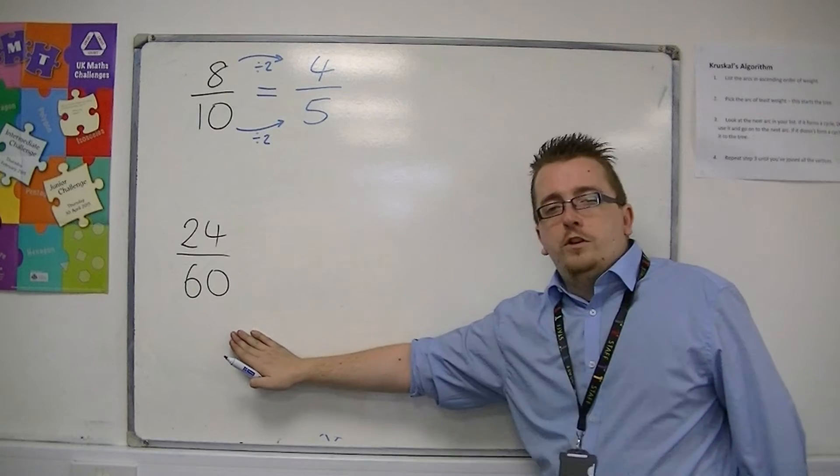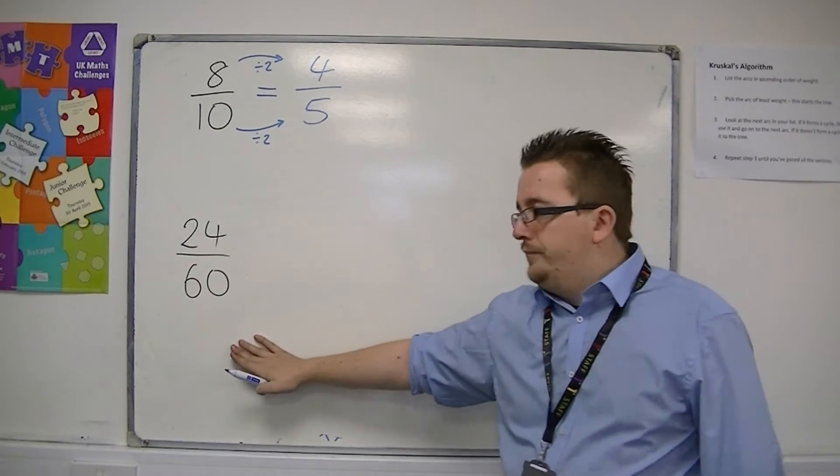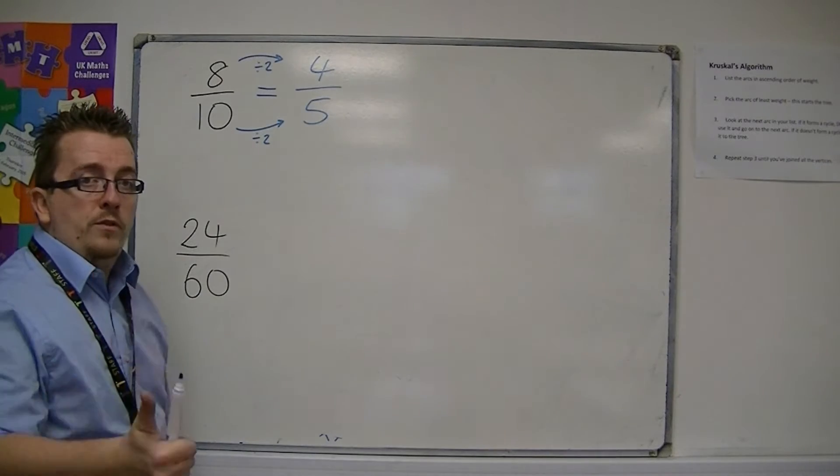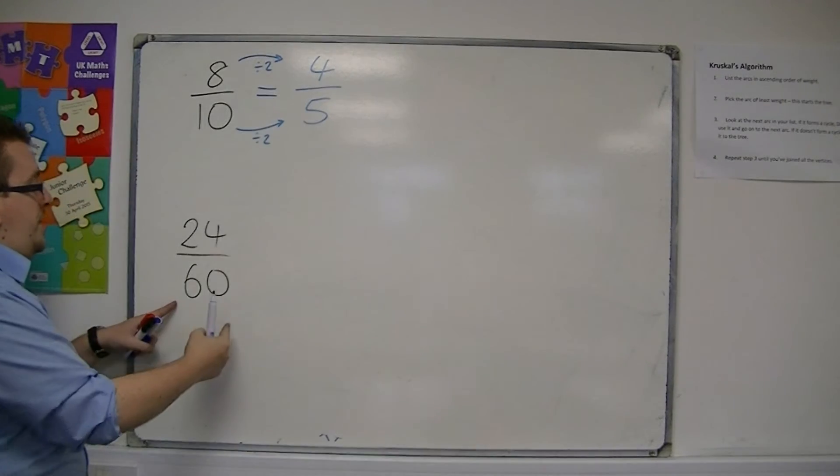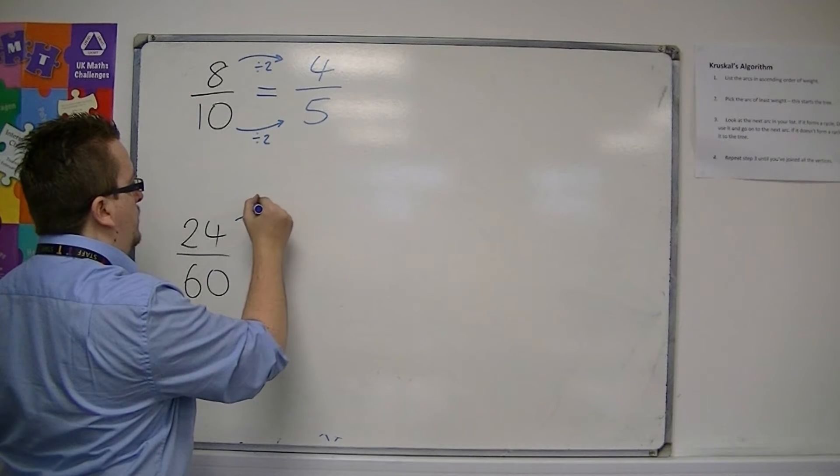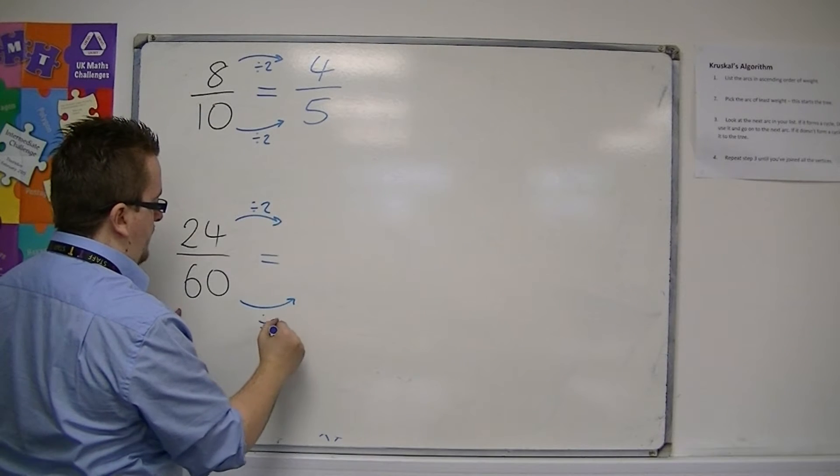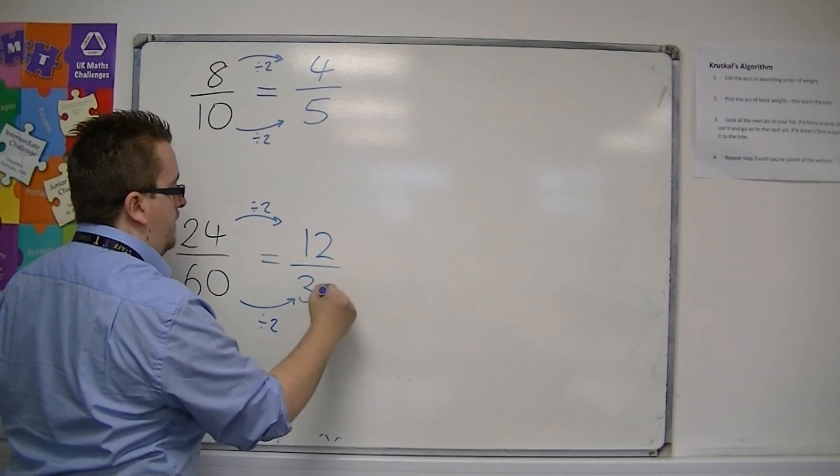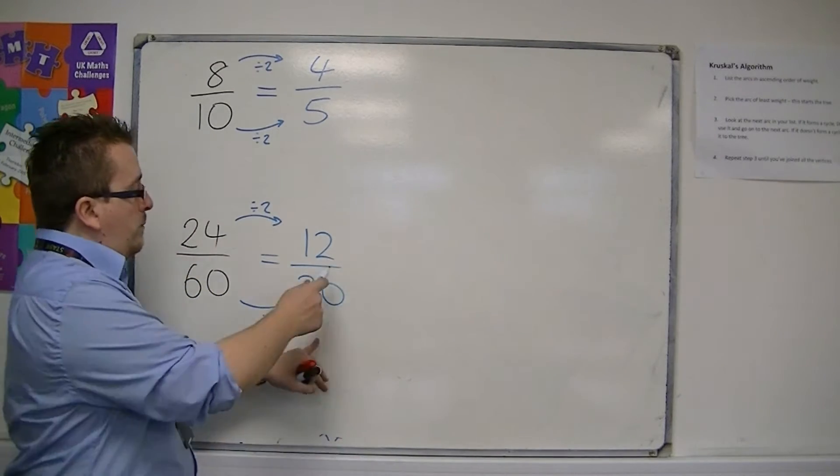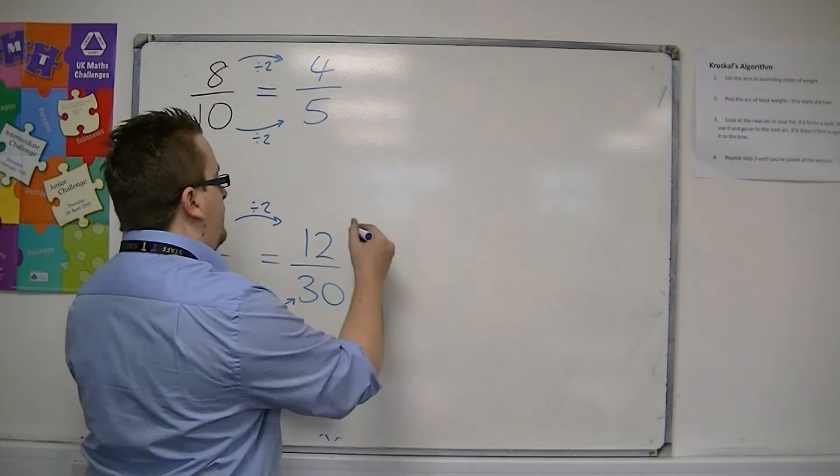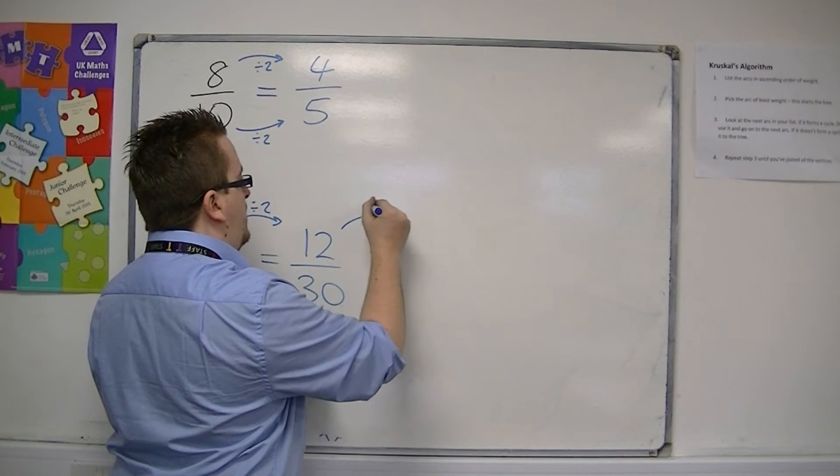On the other hand, if you look at 24 over 60, you should notice first that both the top and the bottom are even again. So we can divide top and bottom by 2, as we did last time. So we're going to get 12 over 30. And then, well, both of these numbers are even as well. So I could divide both top and bottom by 2 again.